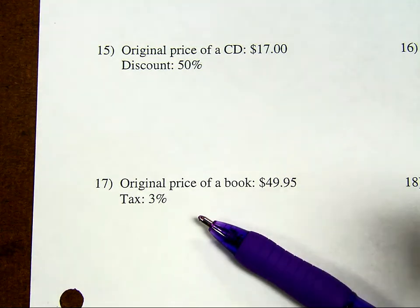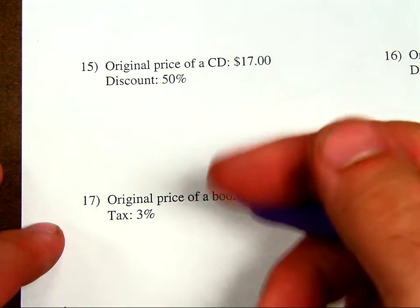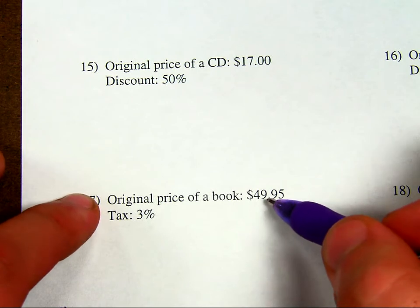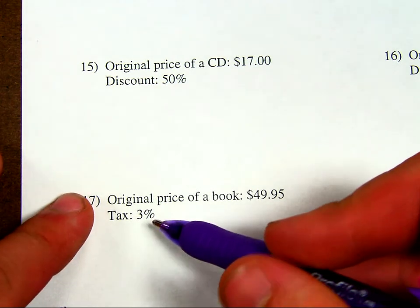Okay, so this is part two about Markup with Discounts and Taxes. For this one, I'm going to specifically focus on discounts and taxes. So here, this first one, we have the original price of a book is $49.95. Our tax is 3%.